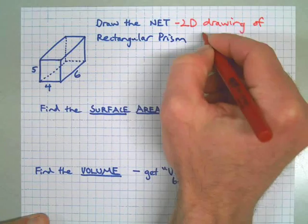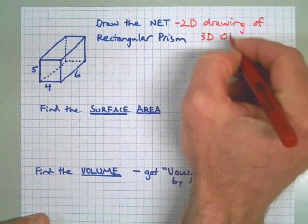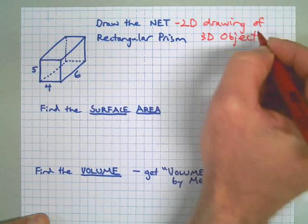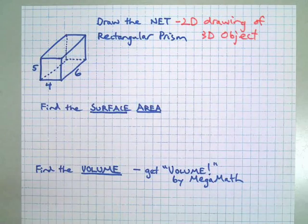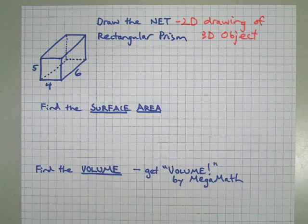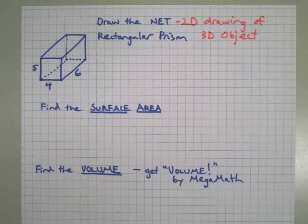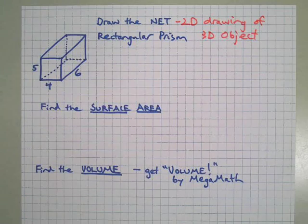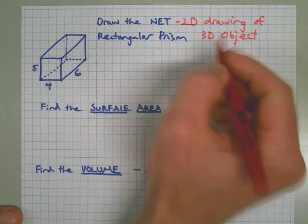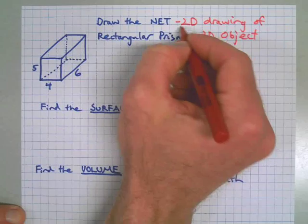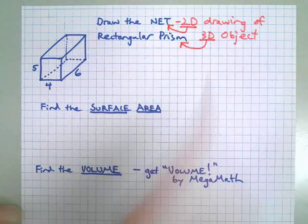A net is flat and on paper, but if you were to fold it and create a three-dimensional object out of it, then that would be a prism. Net is 2D, prism is 3D. The 3D object is the prism, 2D is the net.